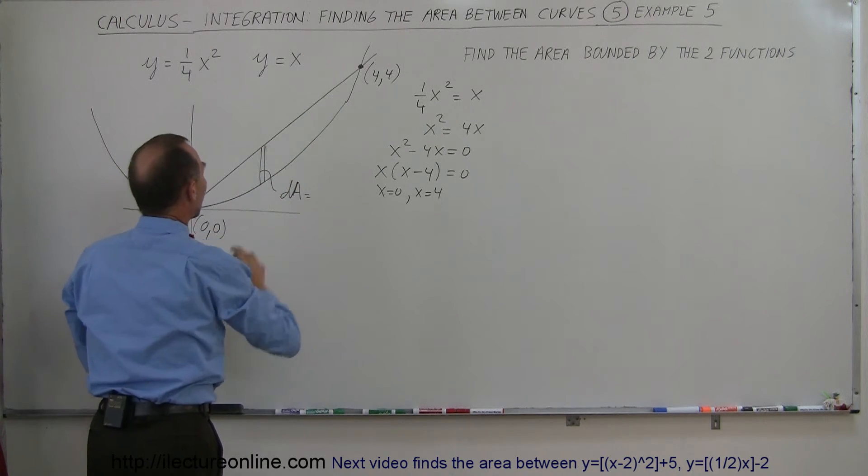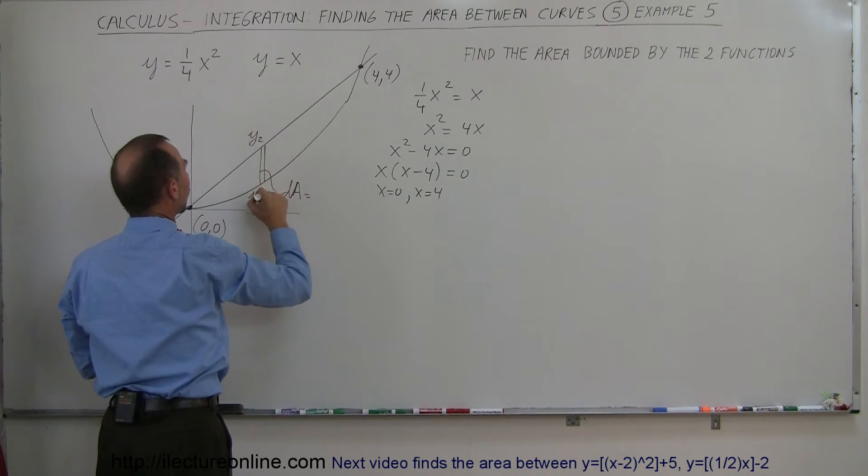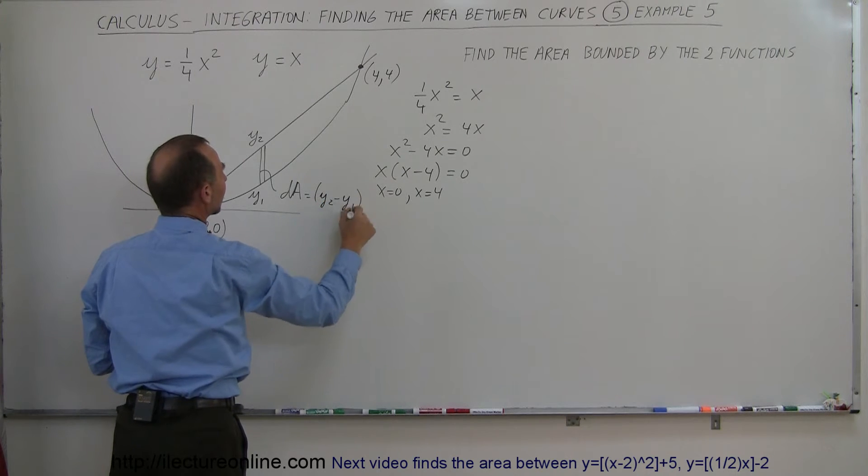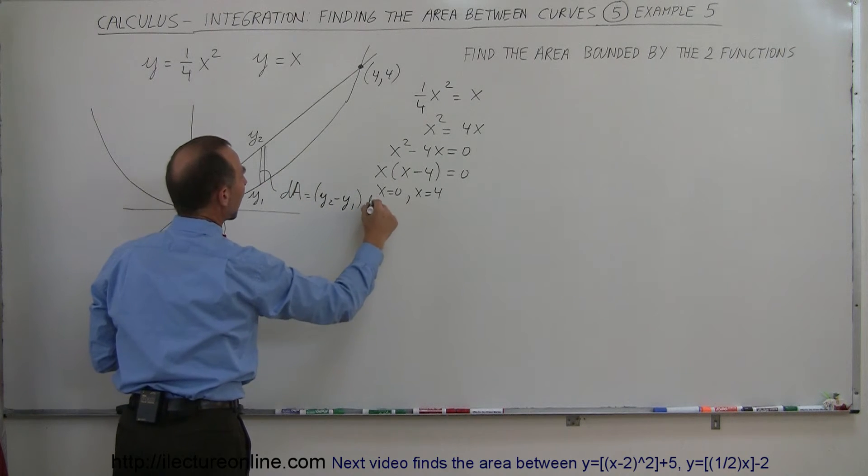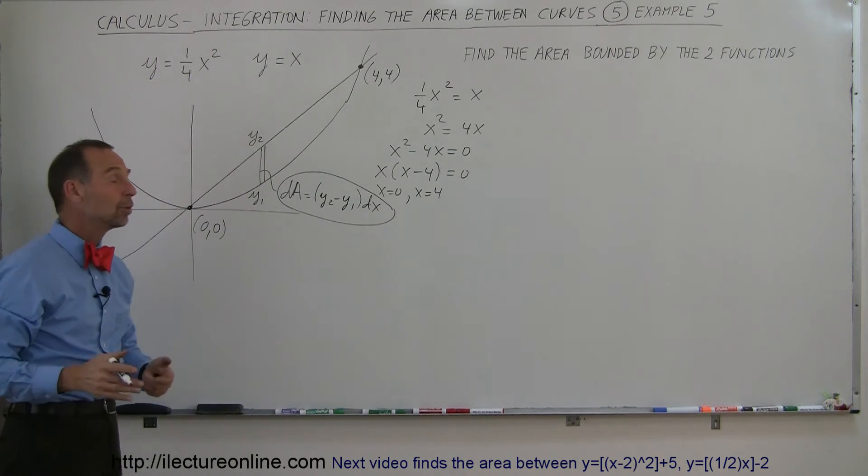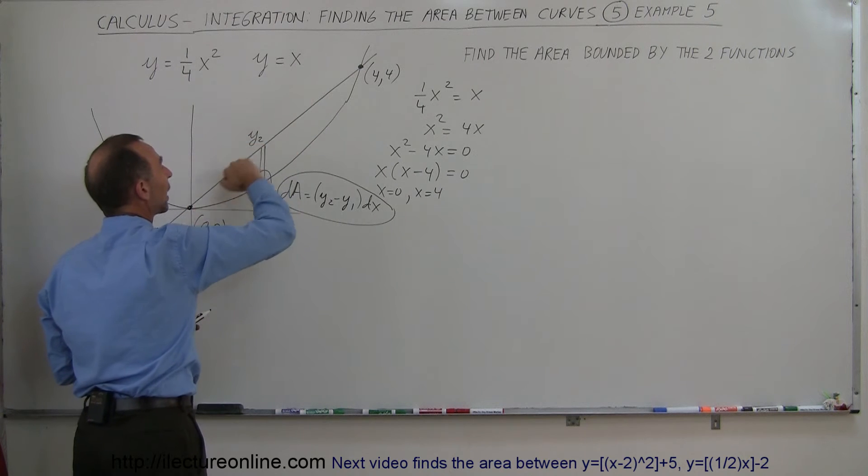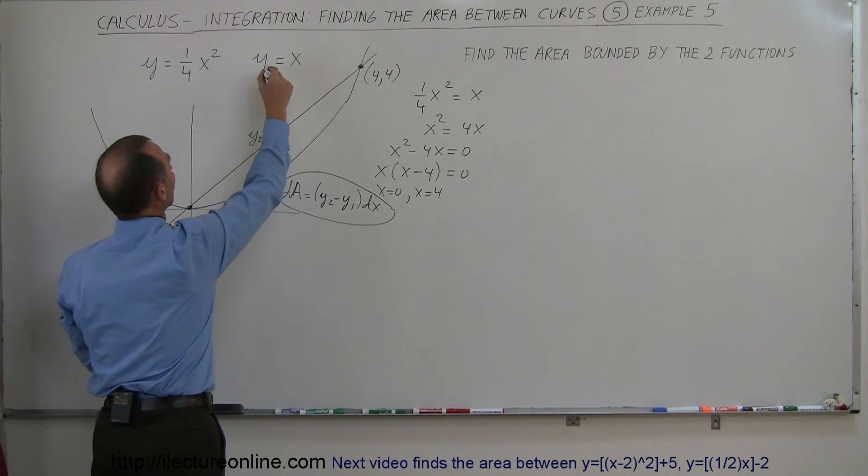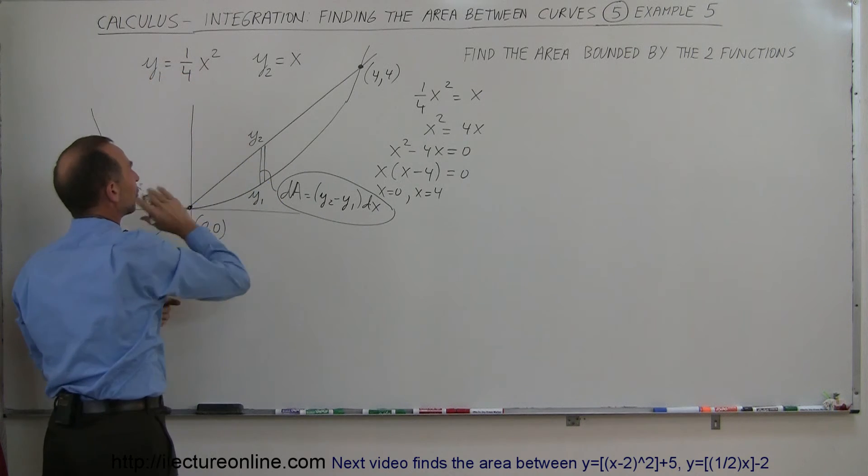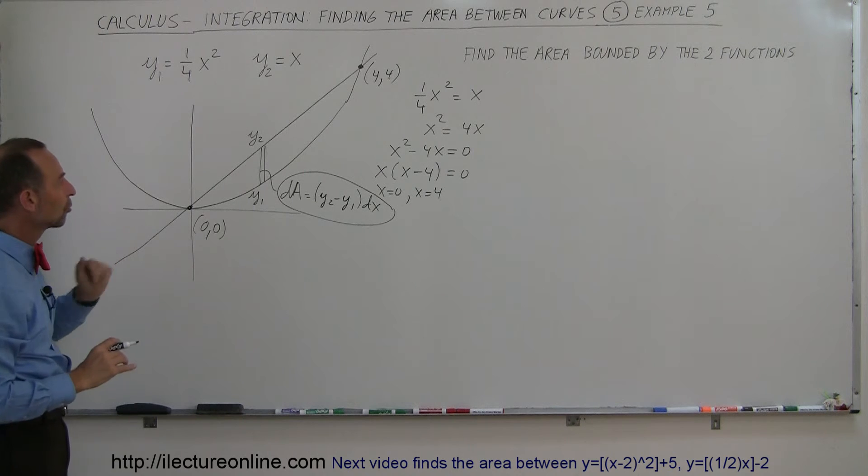And my dA is equal to the height, which would be y2 minus y1 times the width, which would be dx. So here's my small little area element. Now what are y2 and y1 equal to? y2 is the upper limit, which is bounded by the straight line, and the bottom is my parabola, so this is y1. It's always a good idea to use those notations so you know which functions you're dealing with.